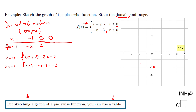With two points we have enough to graph this first piece of the piecewise function. Notice there's an arrow going down to the left, because the graph extends in that direction. It stops at the point (0, −2). Now let's see what happens to the right.